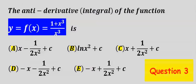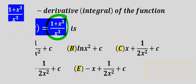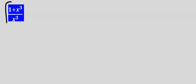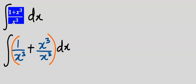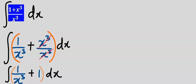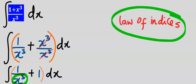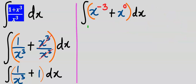Next let's integrate this function. Step number 1 is to integrate this function with respect to x. We note that x to the power of 3 appears at the denominator, so we take away x to the power of 3 from the numerator. At the denominator we are going to apply the law of indices.